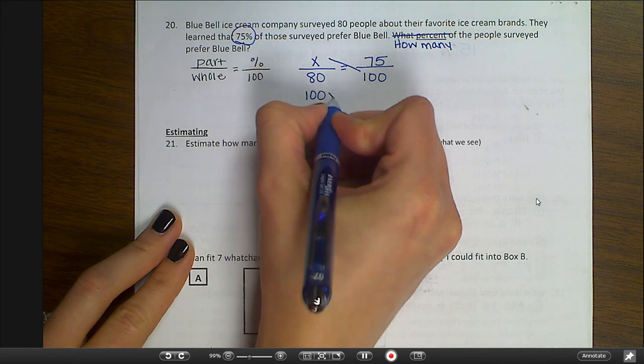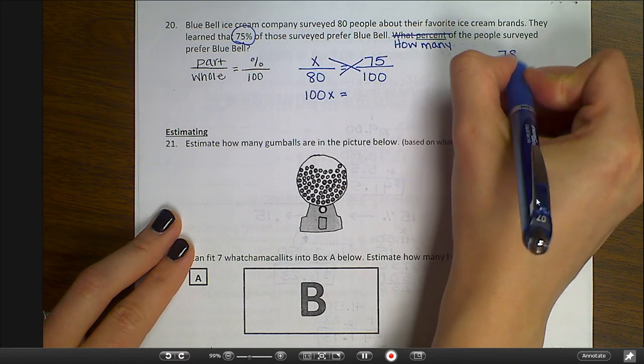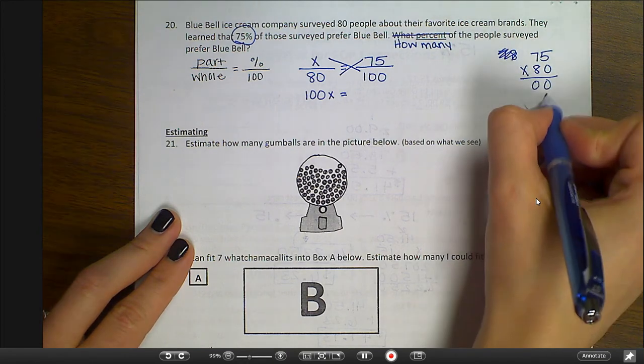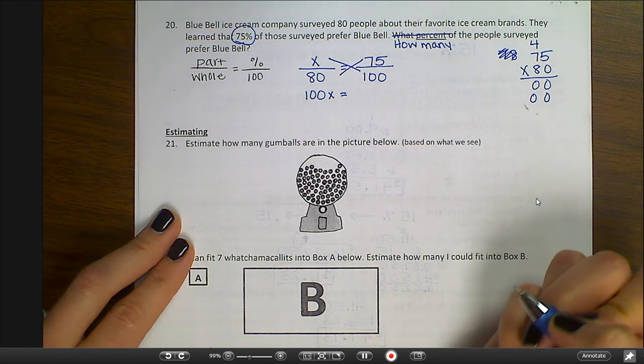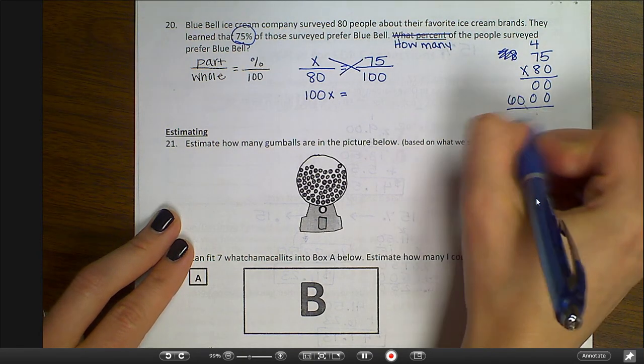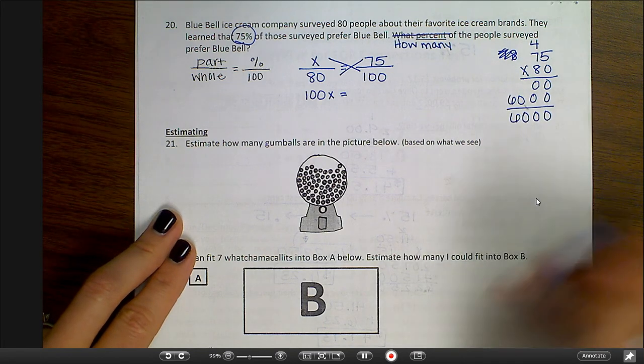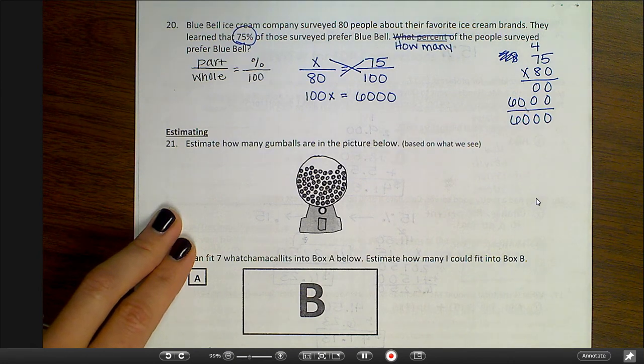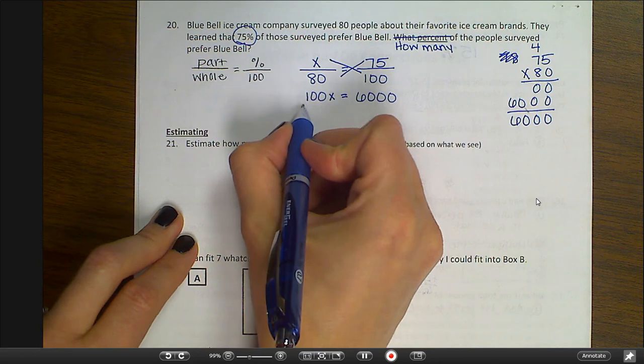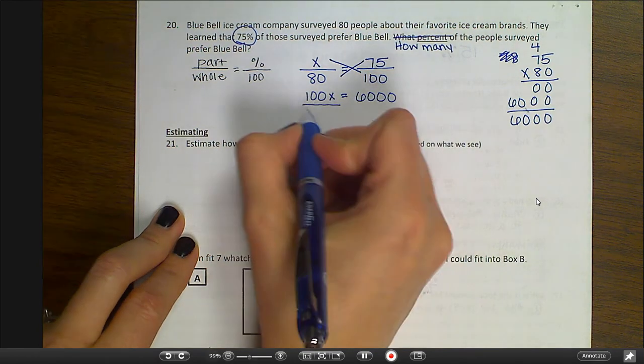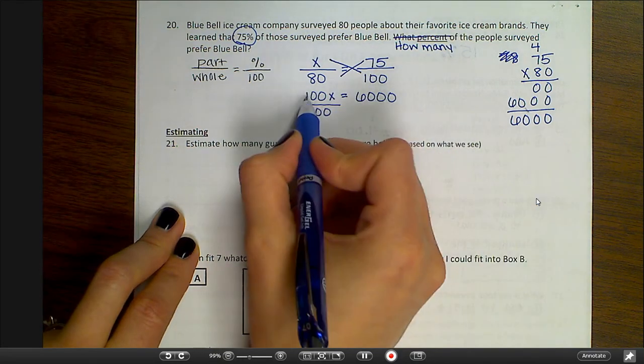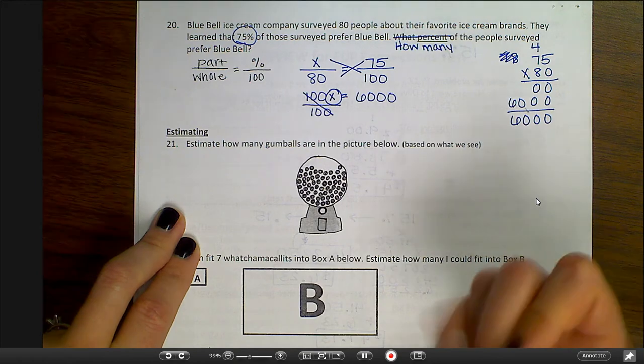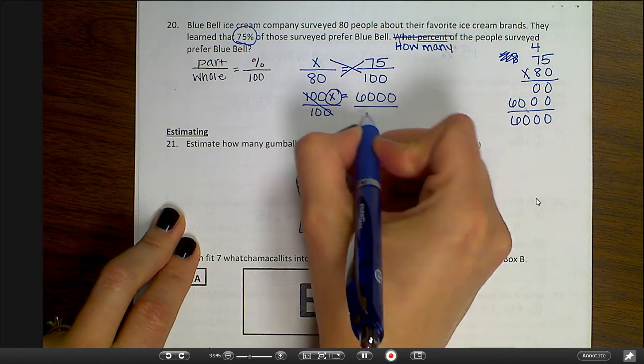100 times X is 100X. And 75 times 80. Let's work that out. I'm going to add a zero. 8 times 5 is 40. 8 times 7 is 56. Plus 4 is 60. And there's nothing after the decimal point. So 6,000 is correct here. So 100X equals 6,000. Now one of the rules of algebra is that whatever you do to one side, you must do to the other. And another rule is that to get X by itself, I want to do the opposite of what it tells me to do. It's telling me to multiply by 100. So I'm going to do the opposite. And I'm going to divide by 100. 100 divided by 100 is 1. So I end up with just one X. And I can cross those out. And I've got an X by itself. But remember, whatever I do to one side, I must do to the other.